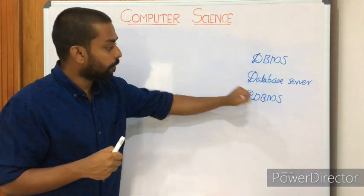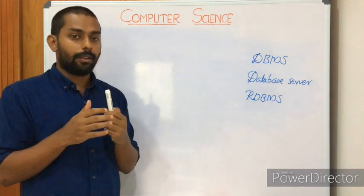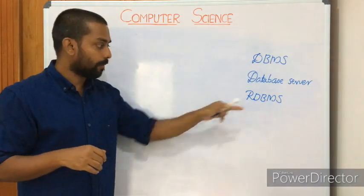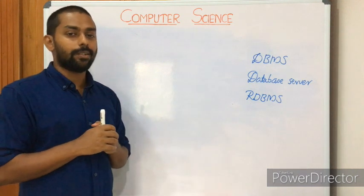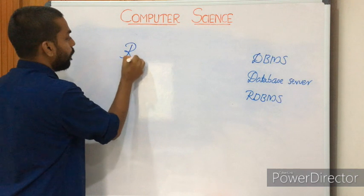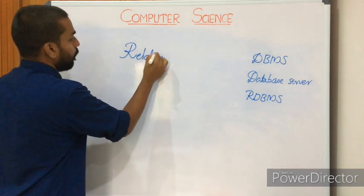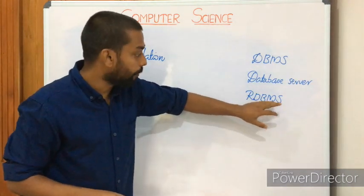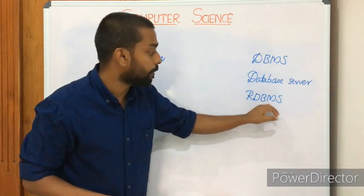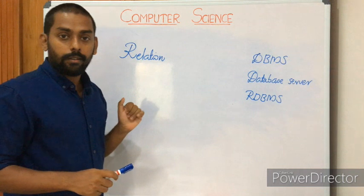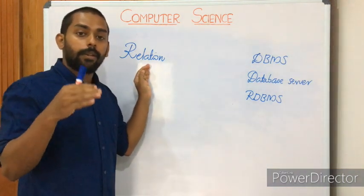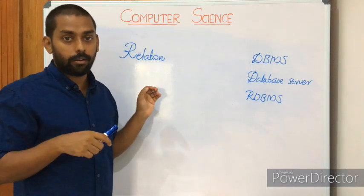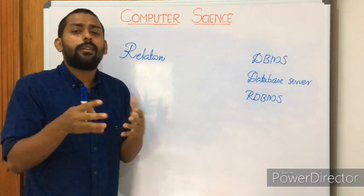Now we move on to RDBMS. The R stands for relational — relational database management system. RDBMS is a database management system that is based on the relational data model. We know what a DBMS is, and RDBMS specifically means it organizes data using a relational data model.